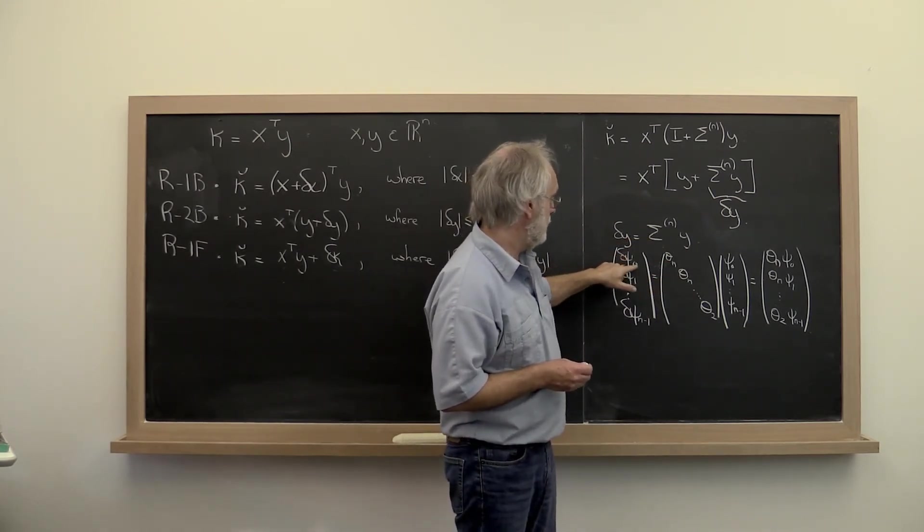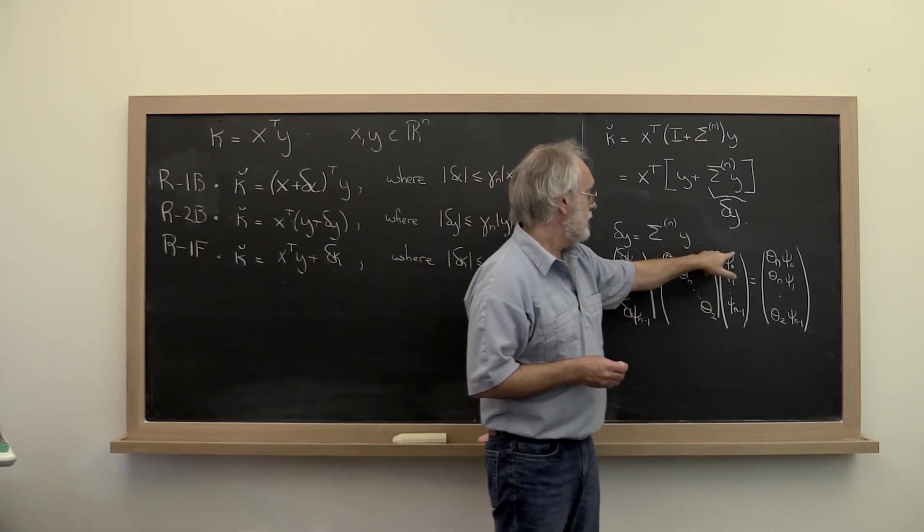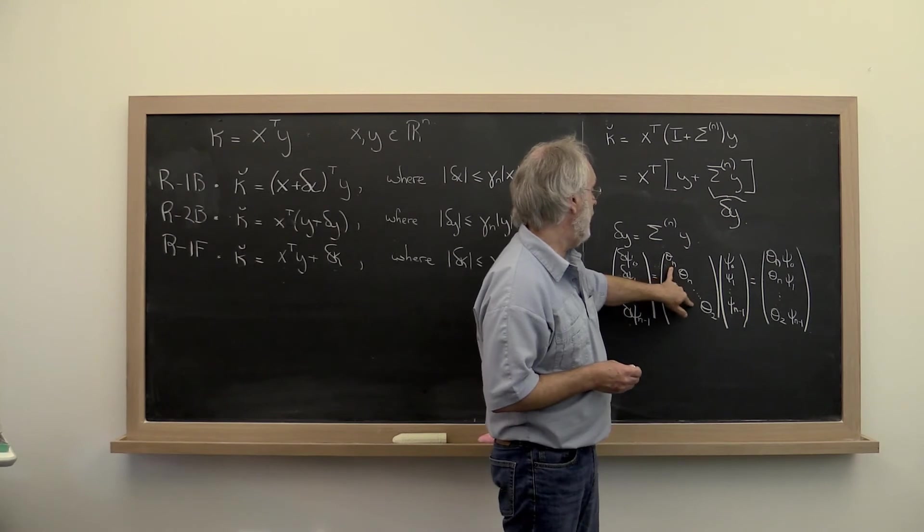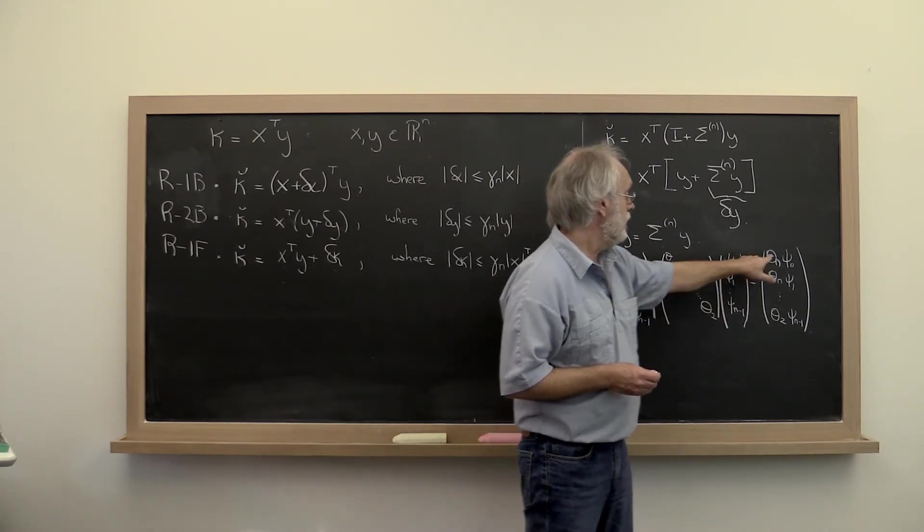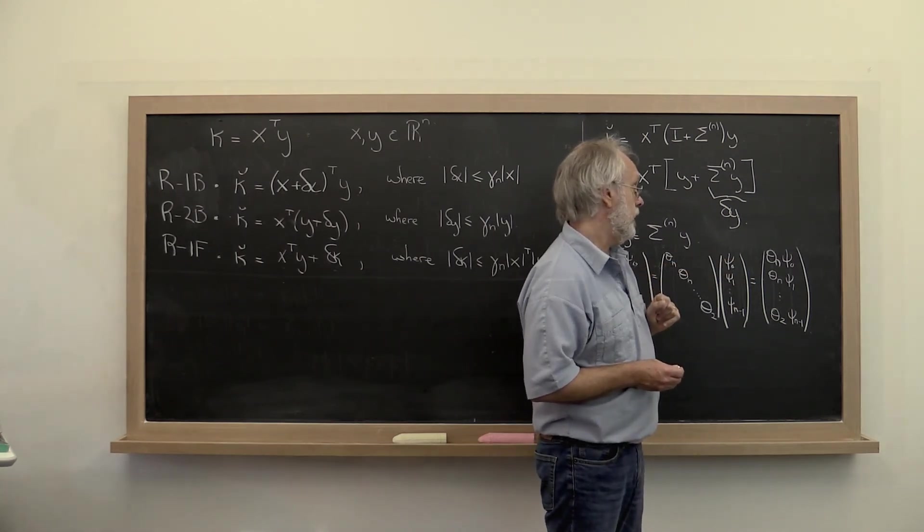We get that delta psi 0, delta psi 1, etc. is equal to this diagonal matrix times the entries of y we now exposed explicitly. And if we do a diagonal matrix times the vector, then we just get this vector right here where corresponding entries multiply each other.